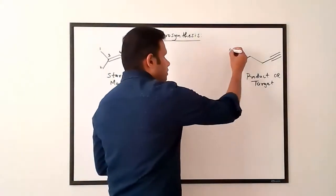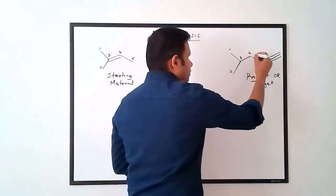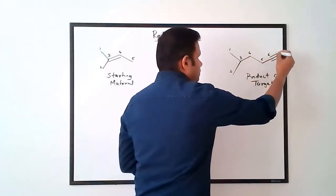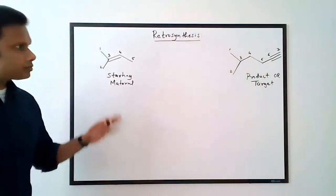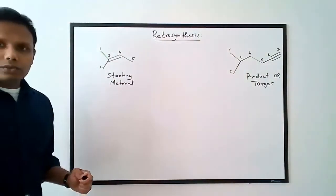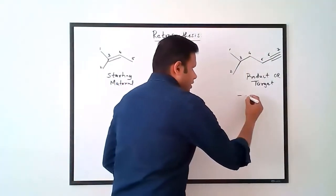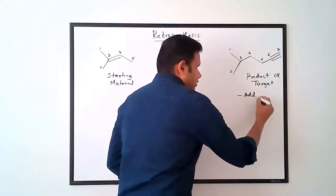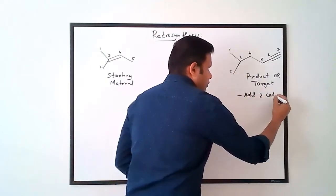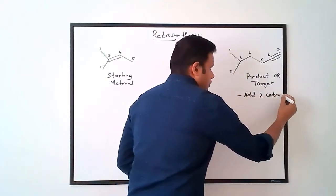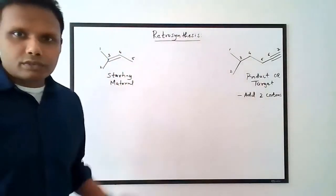My product on the other hand has one, two, three, four, five, six, and seven carbons. So clearly it looks like I have to add two carbons to solve this problem.